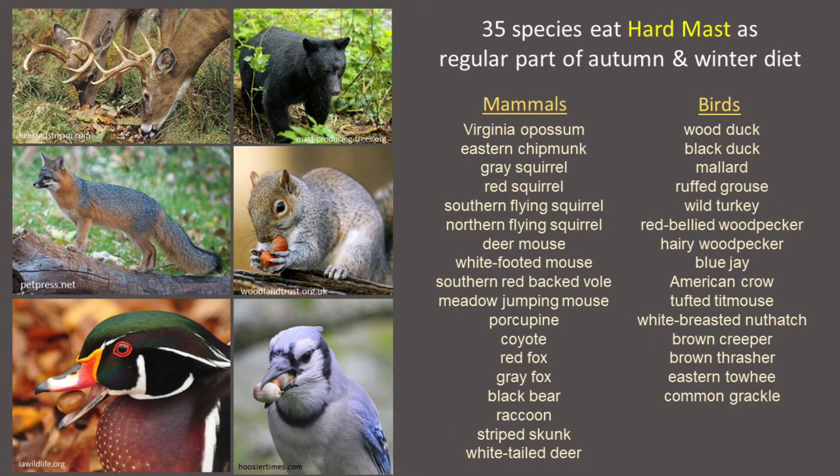In New England, there are about 35 vertebrate wildlife species that regularly include hard mast as an important part of their autumn and winter diet. These species include deer, bear, squirrels, and white-footed mice, and other wildlife folks might not think of as eating hard mast, such as wood ducks, foxes, raccoons, woodpeckers, blue jays, and nuthatches.